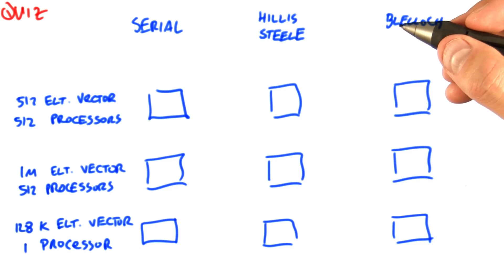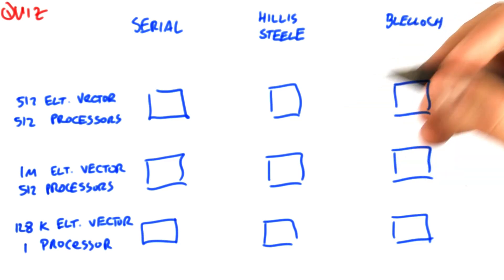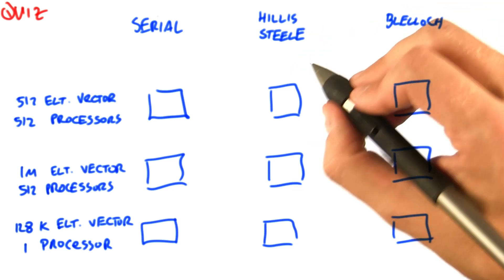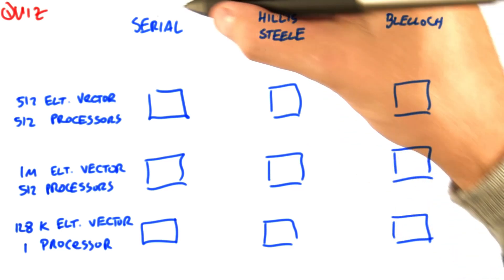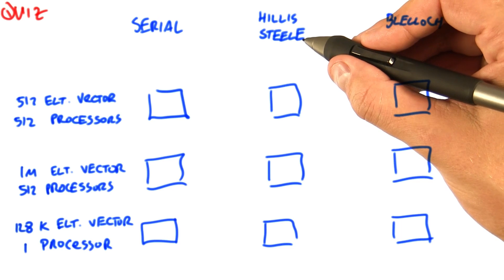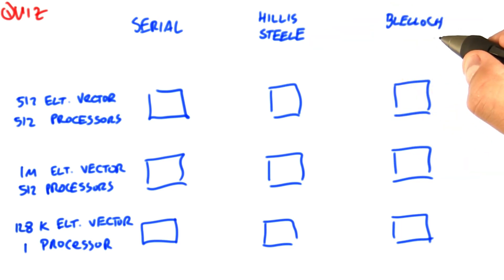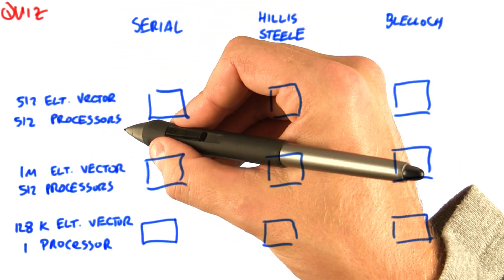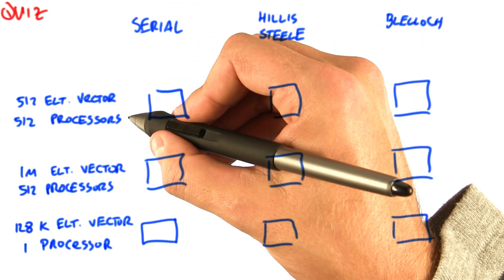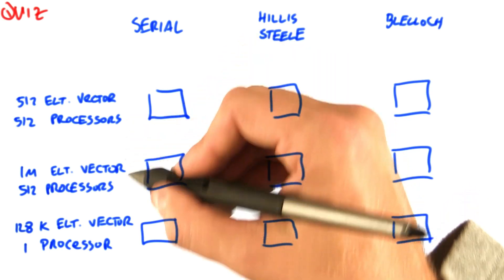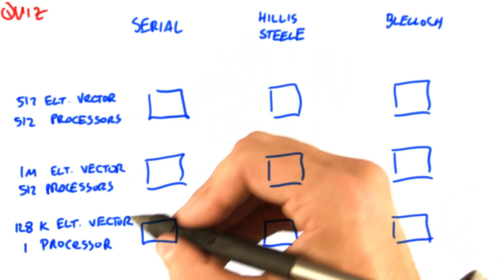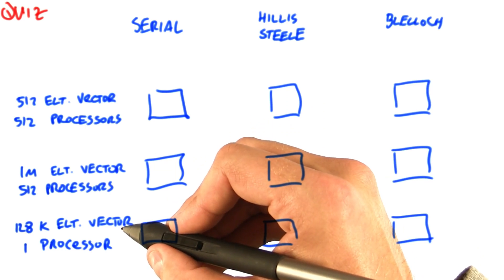So now as a quiz, we're going to look at three different scenarios of things that we want to scan given a particular hardware configuration. Your task is to figure out which algorithm is best suited: the serial algorithm, the step efficient Hillis and Steele algorithm, or the work efficient Blelloch algorithm. The scenarios are: a 512 element vector on a GPU with 512 processors; a 1 million element input vector with 512 processors; or a 128k element vector with one processor.